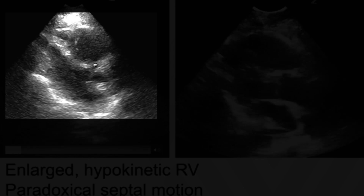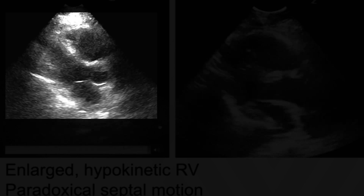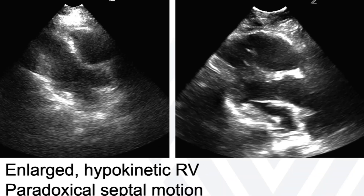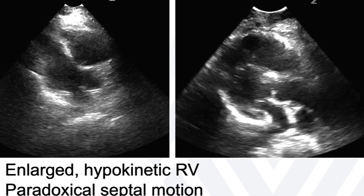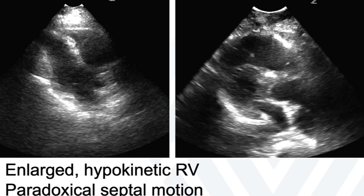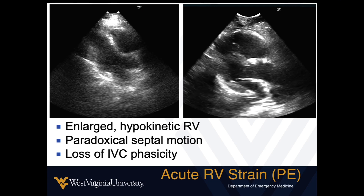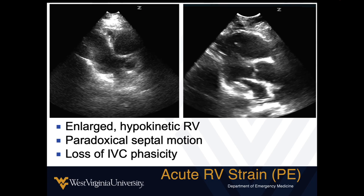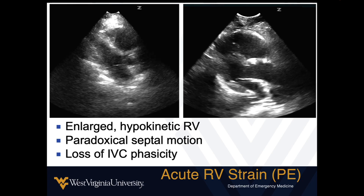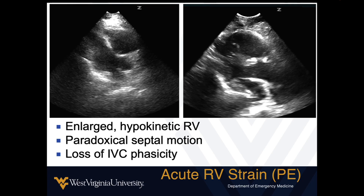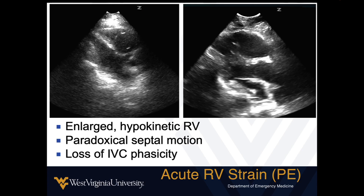You can also look for paradoxical septal motion, where the septum dips towards the left during diastole, and you may see loss of IVC phasicity. This may be due to an acute massive or submassive PE — if they're in shock, by definition it's a massive PE. Just be aware there may be patients with chronic right heart failure who are also in septic shock. The ultrasound doesn't tell us what to do; it gives us information that we must incorporate into the entire clinical picture.